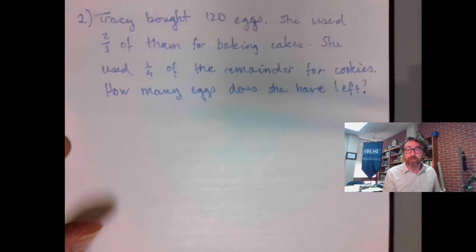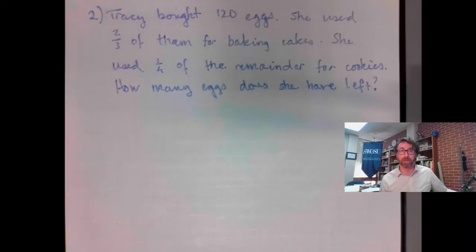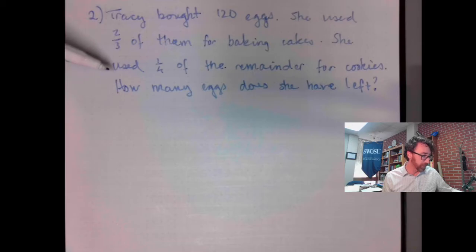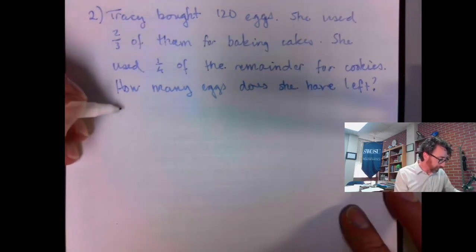Let's look at another one. This is a two-step problem, as we will see in just a second. Tracy bought 120 eggs. She used two-thirds of them for baking cakes. She used one-quarter of the remainder for cookies. How many eggs does she have left?